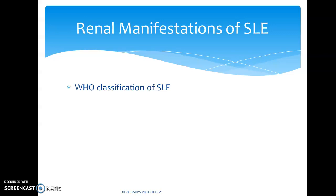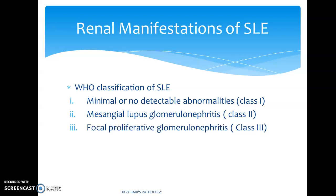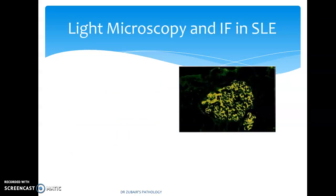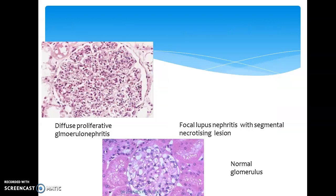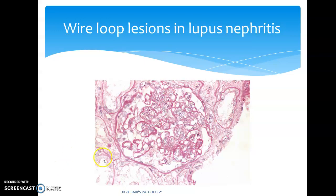The renal manifestations of SLE follow the WHO/ISN classification: class 1 — minimal or no detectable abnormalities; class 2 — mesangial lupus glomerulonephritis; class 3 — focal proliferative glomerulonephritis; class 4 — diffuse proliferative glomerulonephritis; class 5 — membranous glomerulonephritis. Under immunofluorescence, different lesions of lupus nephritis can be observed: diffuse proliferative, focal proliferative with segmental necrosis. In membranous glomerulonephritis, wire-loop lesions and membrane thickening are seen, compared to normal glomerulonephritis.